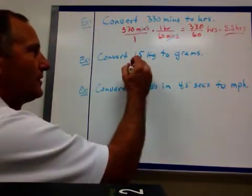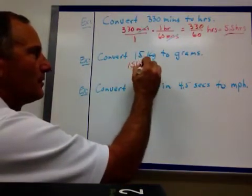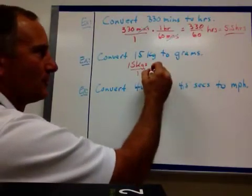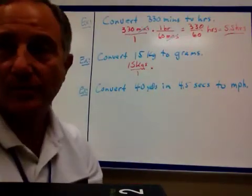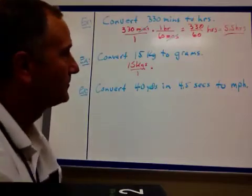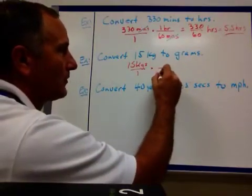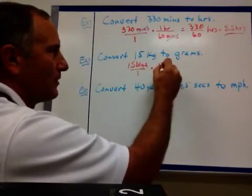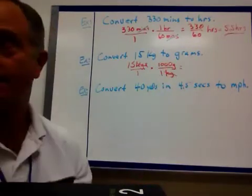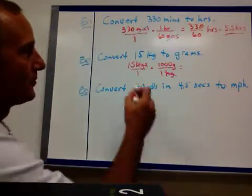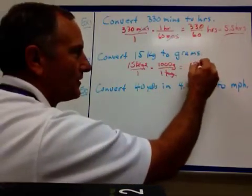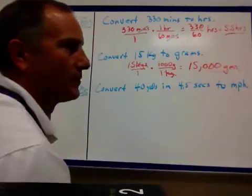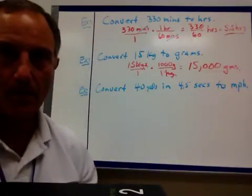You can do it in the metric system. If I have 15 kilograms, and I want to convert it to grams. There's a thousand grams and a kilogram, right? But I'm going to put my kilogram on the bottom here, so I can cancel those, and my thousand grams right here. So 15 times a thousand, that's 15,000 grams.